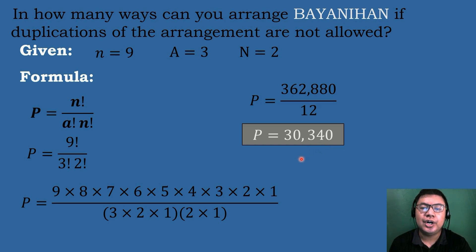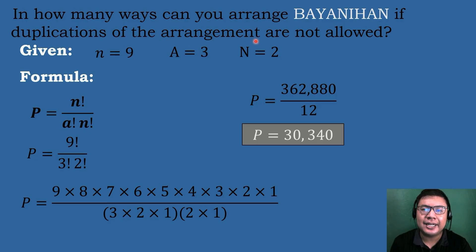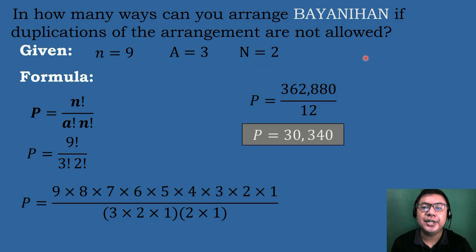Therefore, there are 30,340 possible ways we can arrange 'bayanihan' if duplications of the arrangement are not allowed.